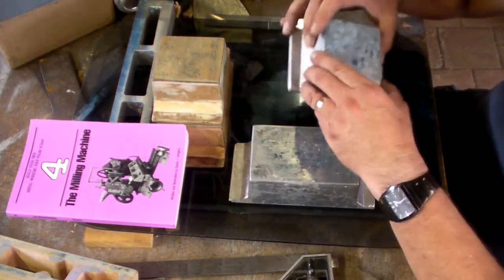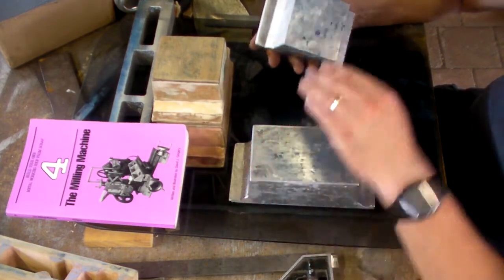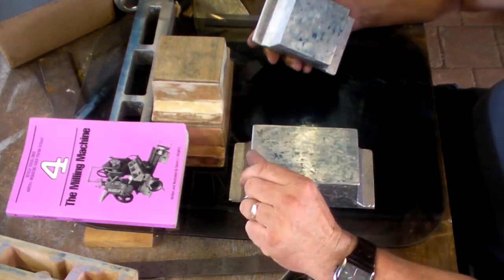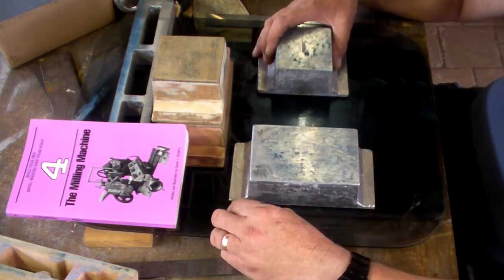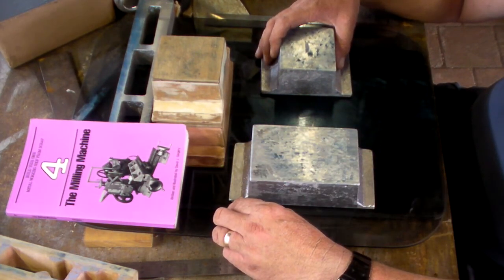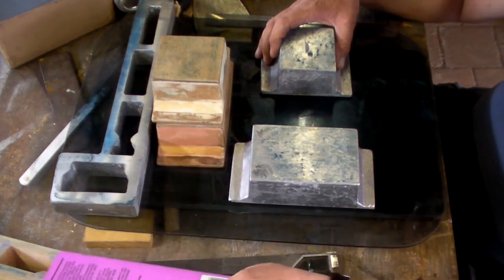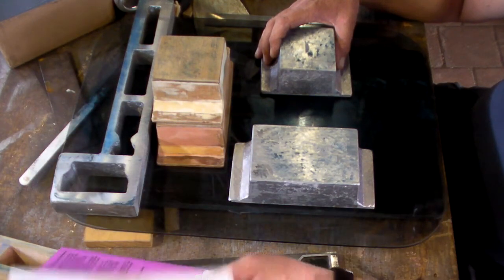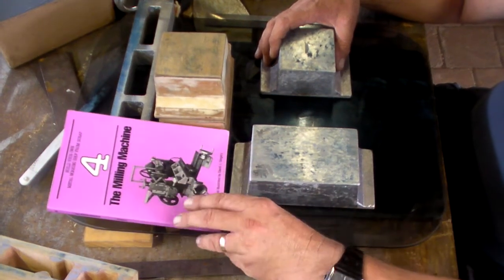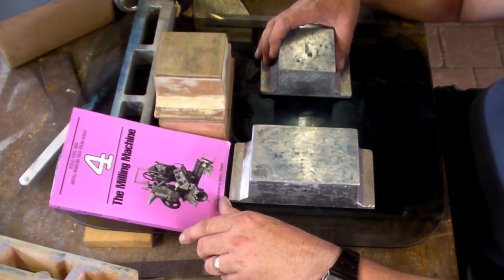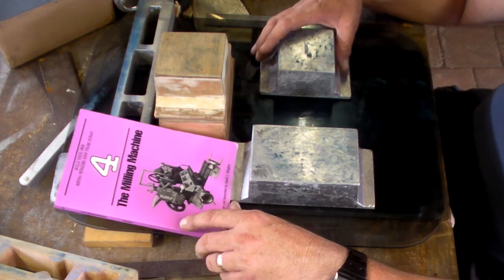So there we go, we've got three castings done. These are all hand filed and hand scraped and yes, I'll have to show you the casting of these parts. But this is the beginning of the Dave Gingery milling machine. Thanks for your time.